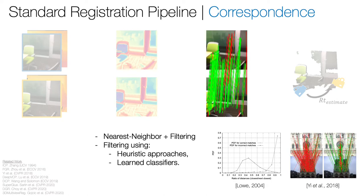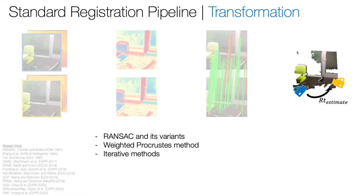Next, correspondences are estimated between the two feature sets. This is typically done using nearest neighbor search, followed by filtering to handle outliers. Finally, the correspondences are used to fit a 6D transformation. While RANSAC is a common choice due to its simplicity and robustness, recent work has proposed differentiable methods for learning pipelines.